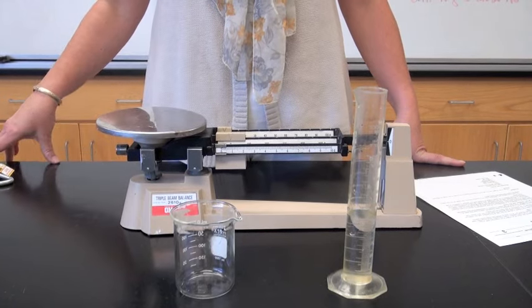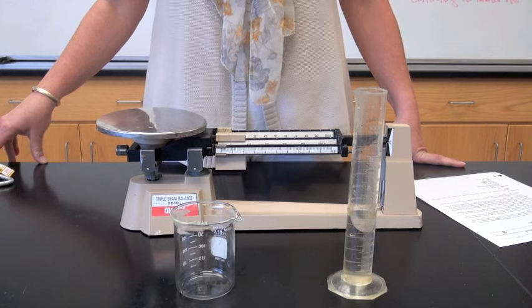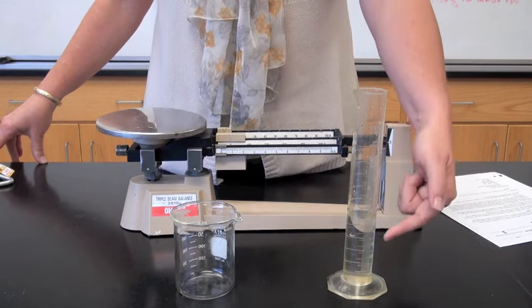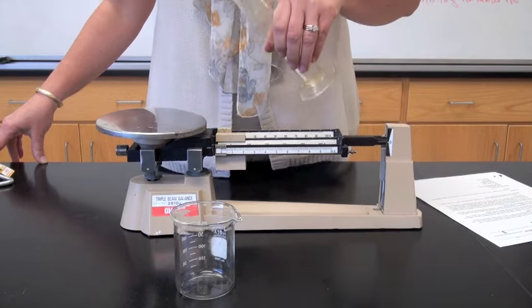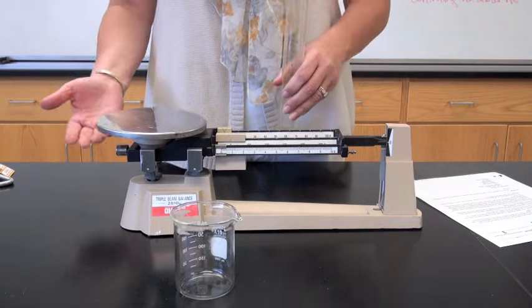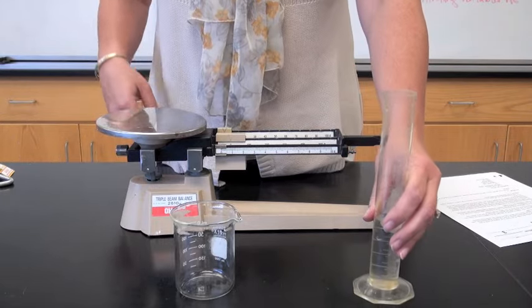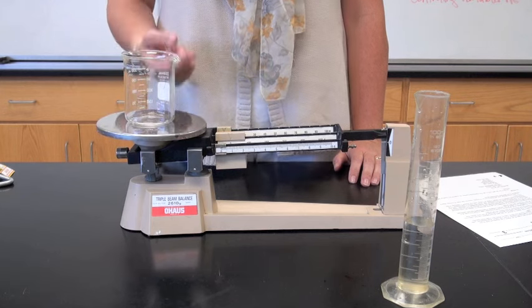The second way of using the triple beam balance is by finding mass by difference. Sometimes you need to measure the amount or the mass of a liquid or a fluid. You can't just simply pour this on the pan because it's all going to fly away or roll off. So what you have to do first is measure the mass of a container, such as a beaker, put it on the pan,